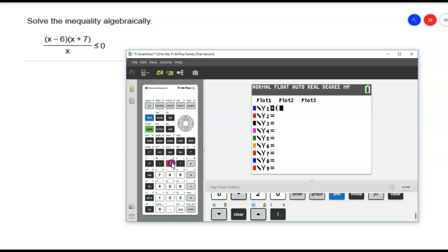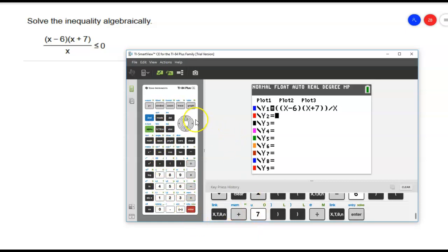And remember, put the entire top in parentheses. So x minus 6, close, x plus 7, x plus 7, double close, divided by, and there's just going to be an x on the bottom. So here's my equation.